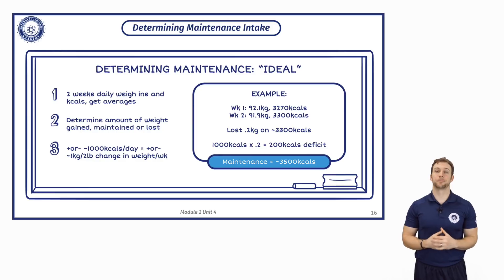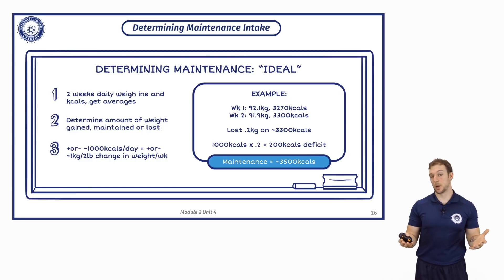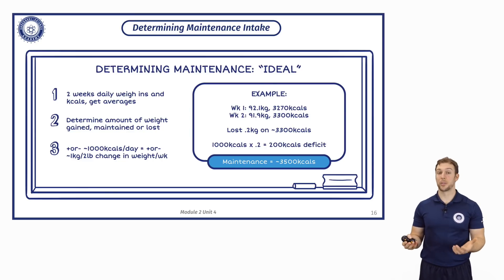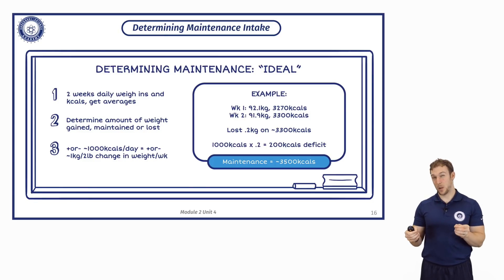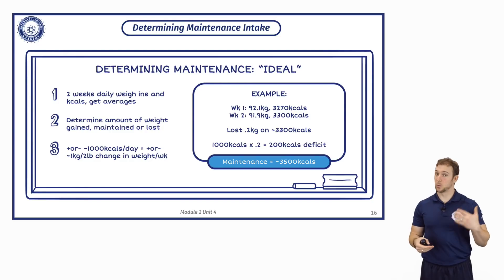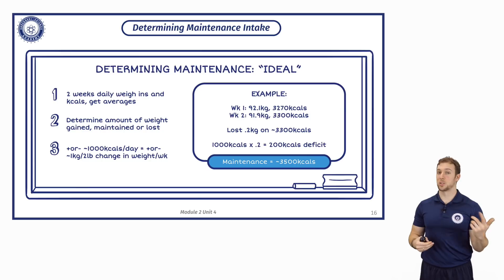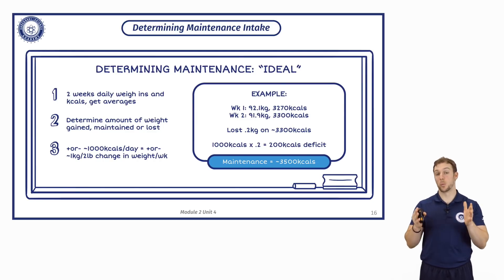For example, take that same 92 kilogram individual. In week one their average body weight was about 92.1 kg and they consumed just under 3,300 calories. In week two they also consumed about 3,300 calories, however their body weight dropped about 200 grams. This means 3,300 calories is probably just below maintenance. Using the relationship that 1,000 calories per day equals one kilogram per week, we multiply 1,000 by 0.2 — the change in body weight — and find they are in roughly a 200 calorie daily deficit. Therefore, you can start that person on roughly 3,500 calories to maintain their weight.